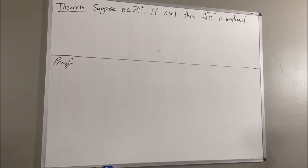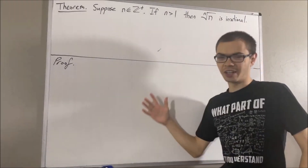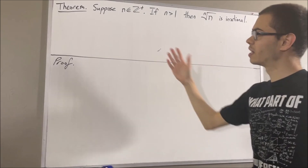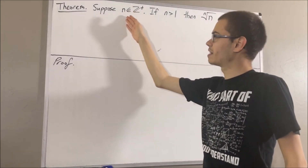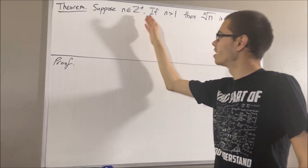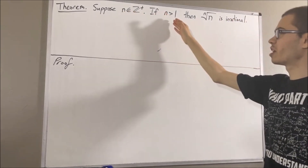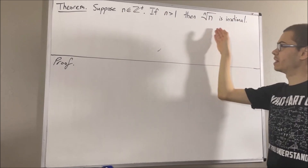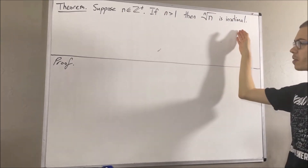Hello! In this video, we are going to prove the following theorem. Suppose n is a positive integer. If n is greater than 1, then the n-th root of n is irrational.